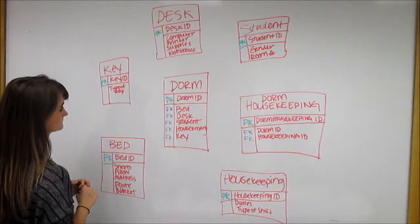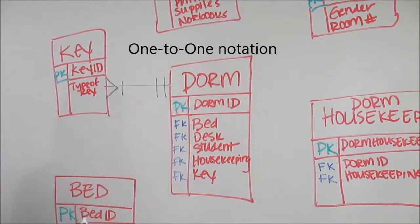We will first form a relationship between dorm and key entities. A dorm can have one or many keys, while the key belongs to that one dorm.